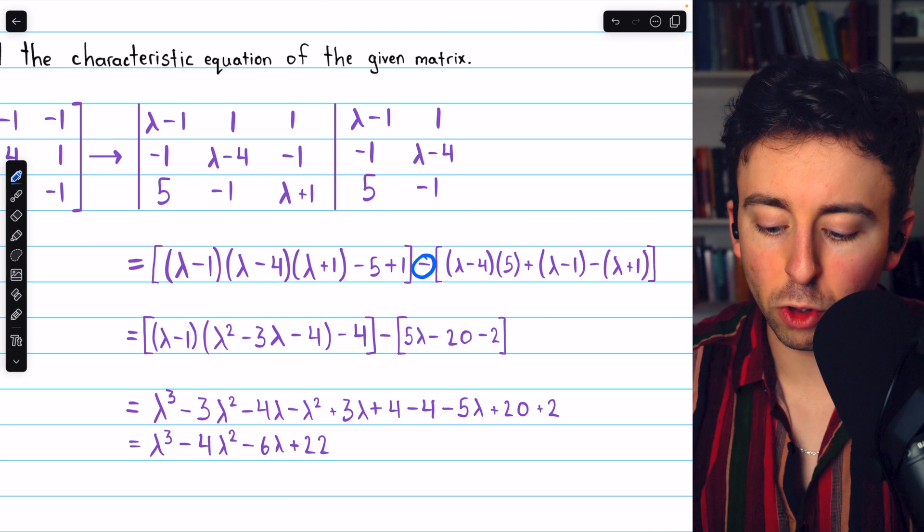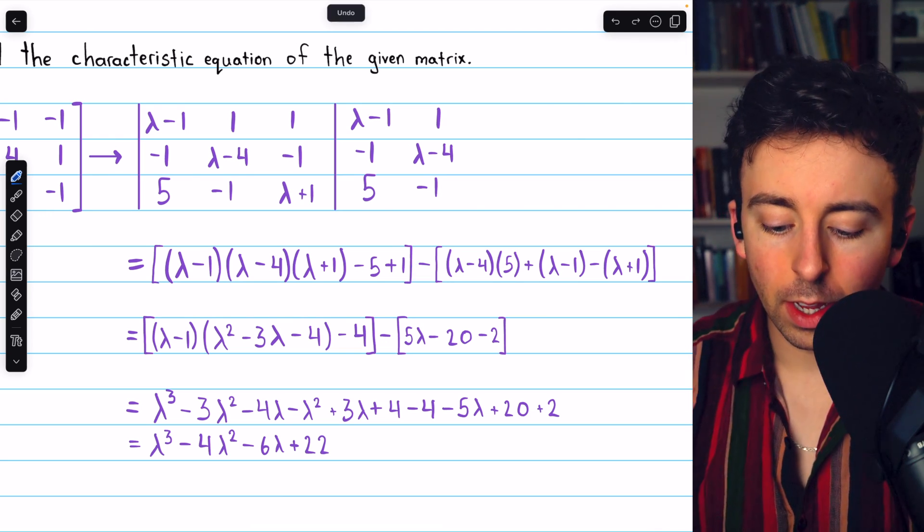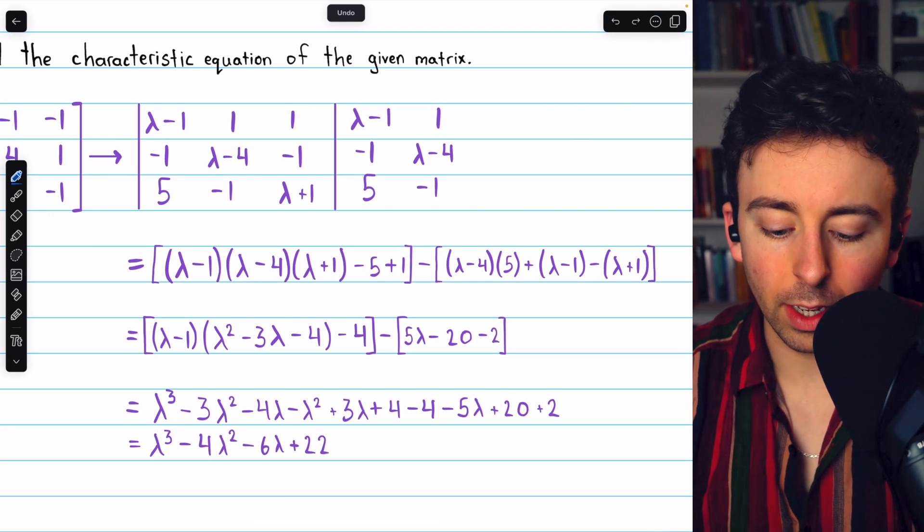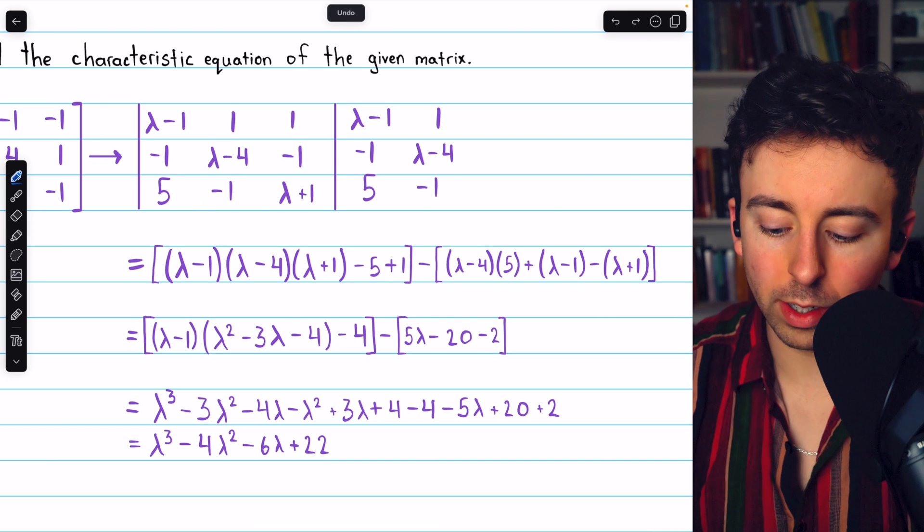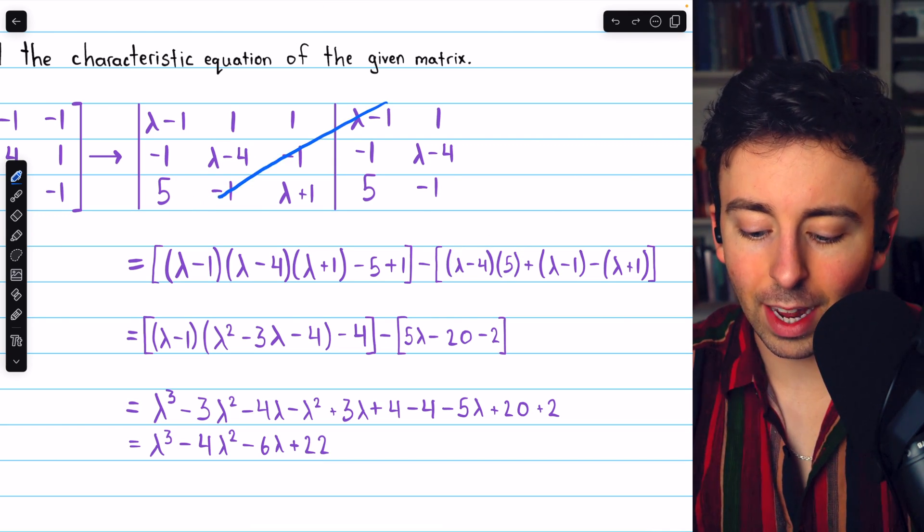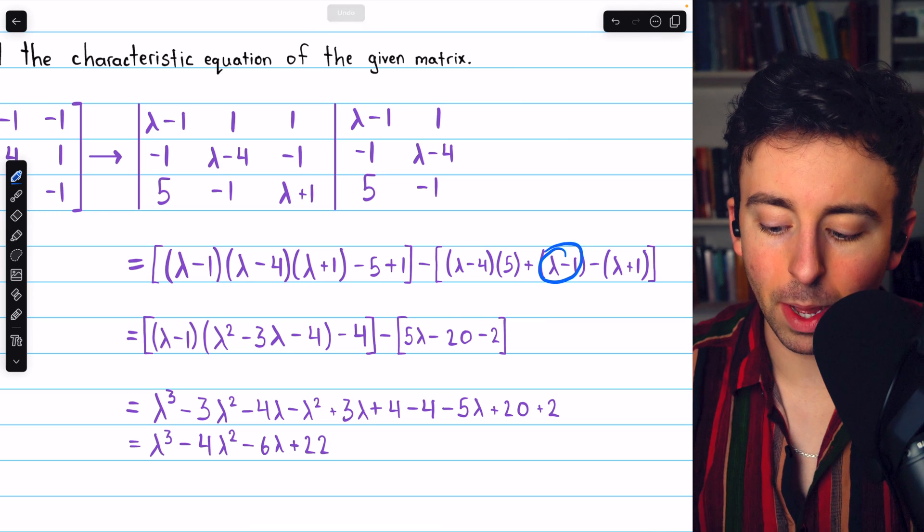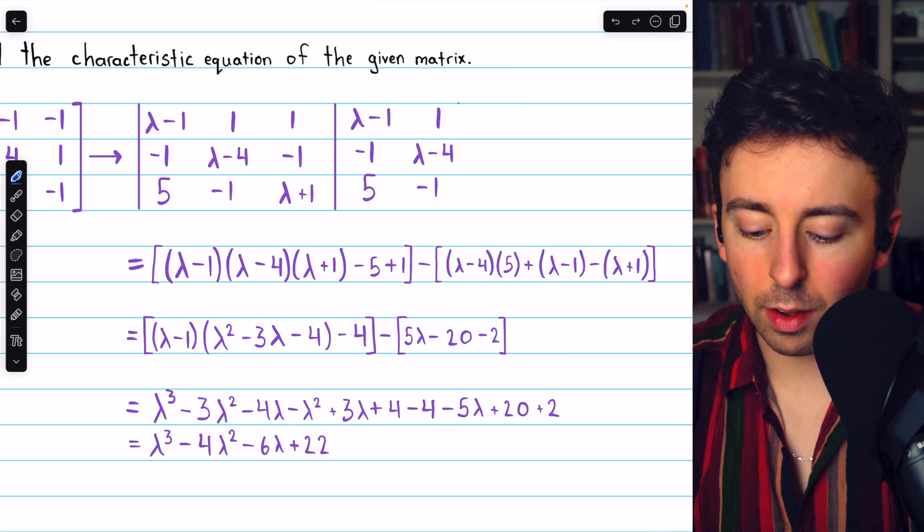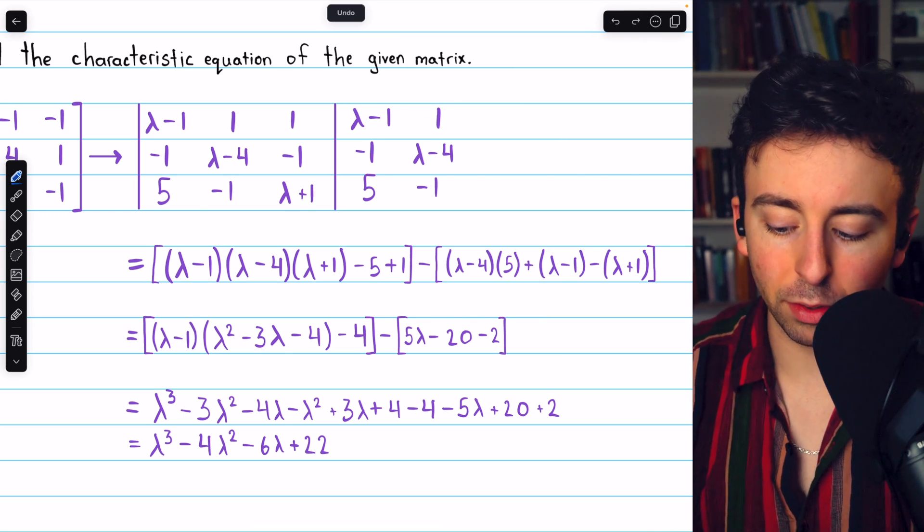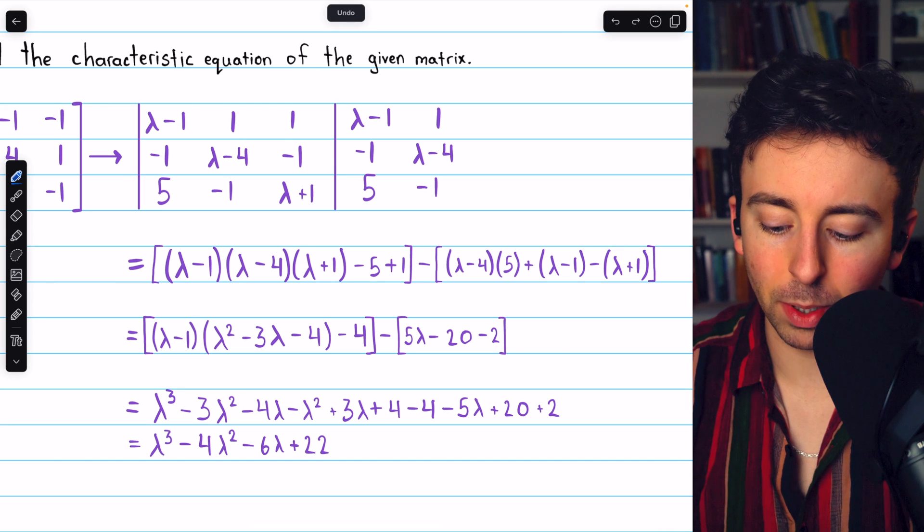Then we have to do the same thing with the leftward diagonals, but we are going to subtract their sum. The first leftward diagonal is lambda minus 4 times 5, which we see there. The next diagonal ends up just being lambda minus 1. And then we have 1 times negative 1 times lambda plus 1, so that's minus lambda plus 1.